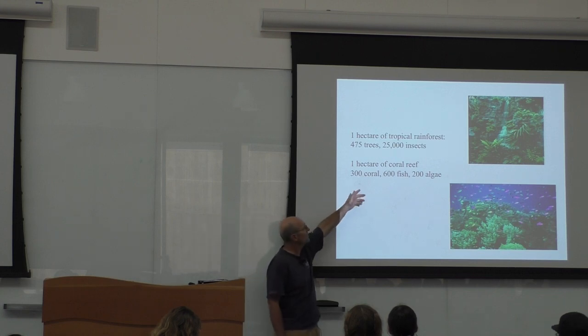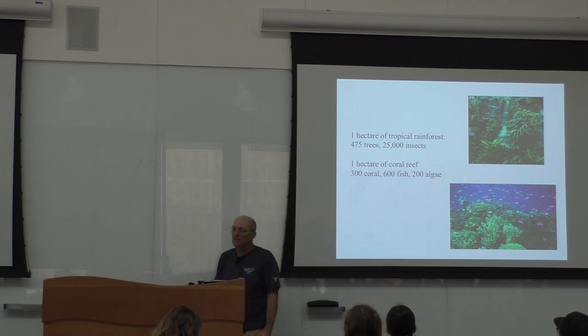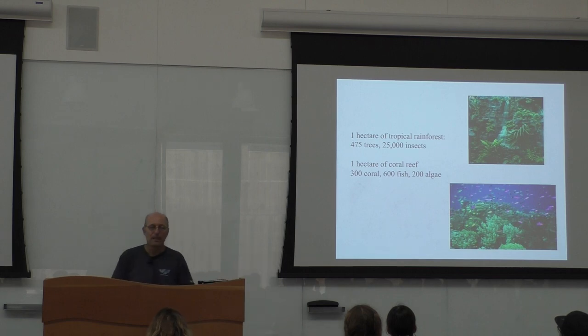One acre of tropical rainforest, 475 species of trees, 25,000 species of insects. Each tree that is being cut down in the Amazon is probably harboring an endemic species of insects. Each individual tree. One acre of coral reef has less species, nevertheless, quite a number of them.